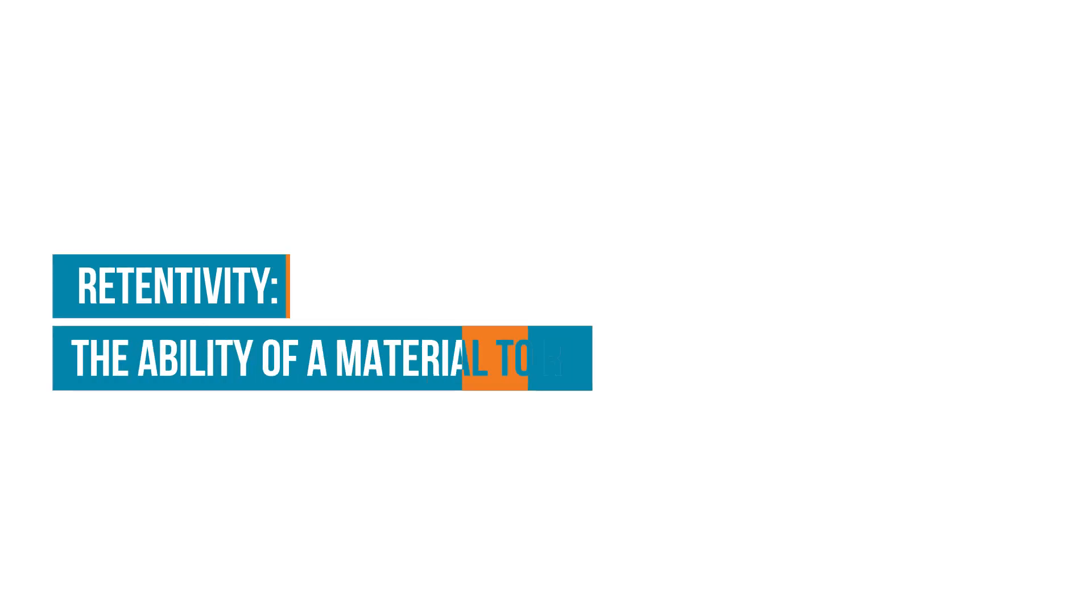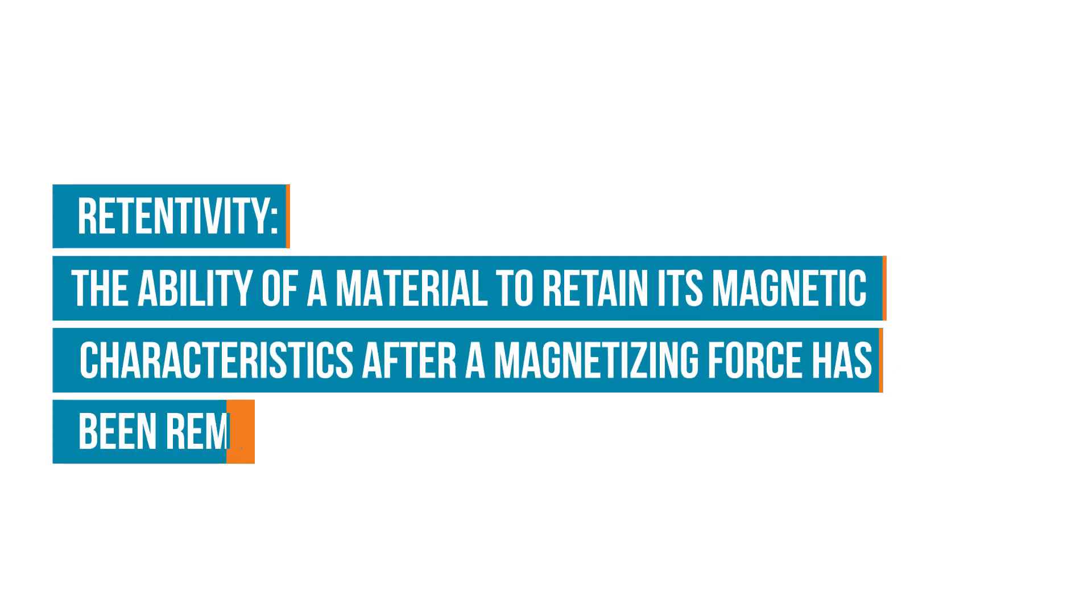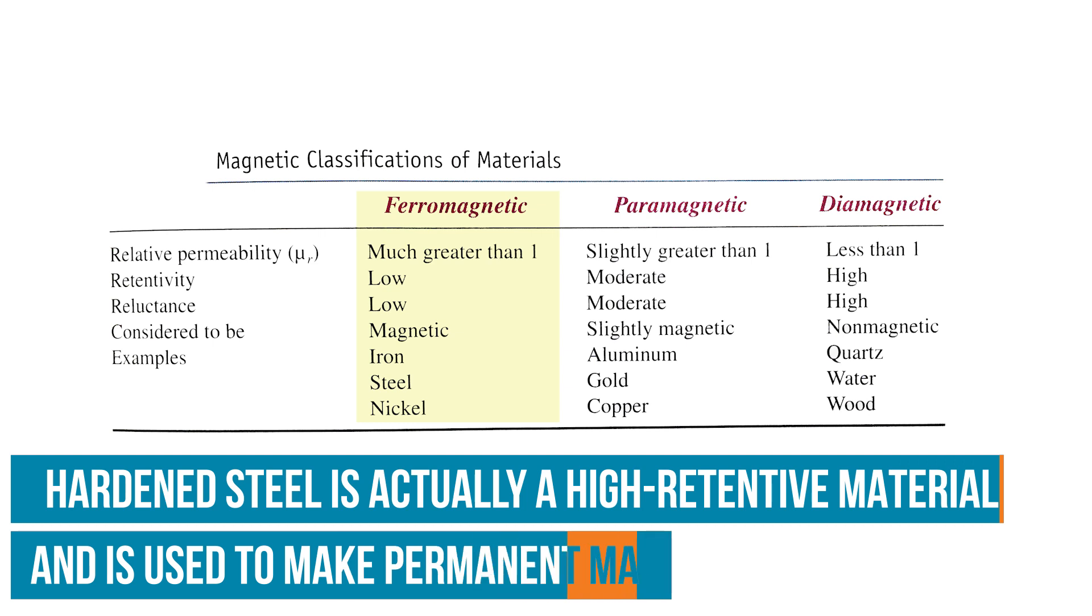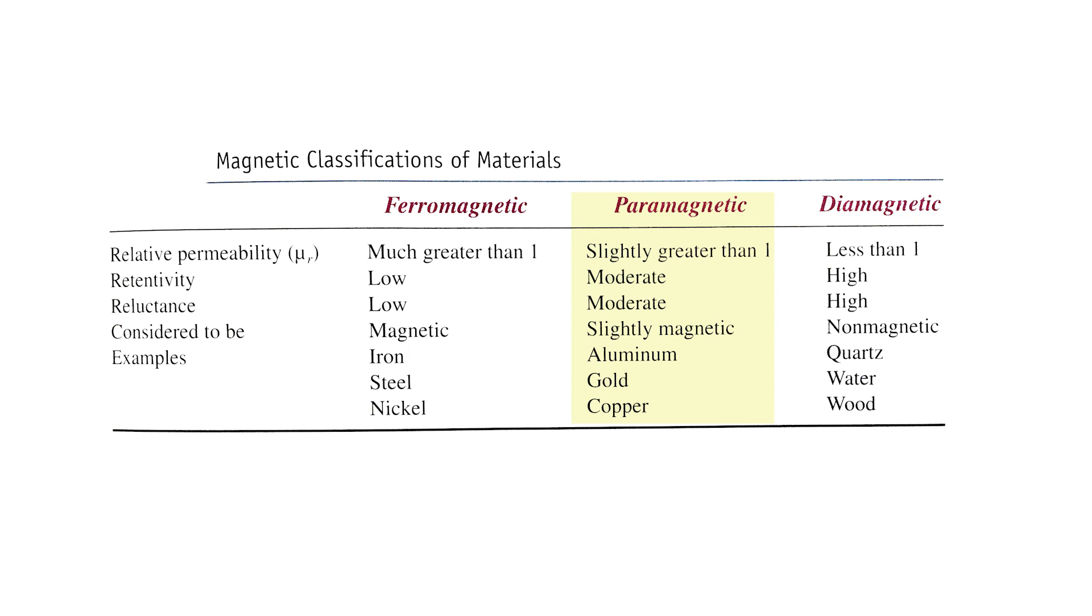The material's retentivity determines how well it stays magnetized once the magnet has been removed. High permeability materials have a low reluctance and are therefore easily magnetized, but they have a low retentivity, so they quickly lose their magnetic strength. Low permeability materials have a high reluctance and are therefore difficult to magnetize. However, they do have a high retentivity, so once magnetized, they tend to retain their magnetic strength for a long period of time.